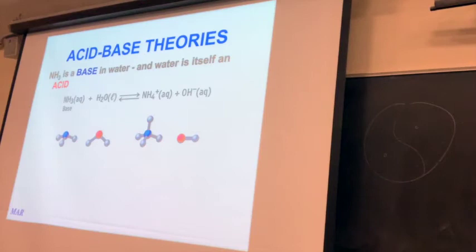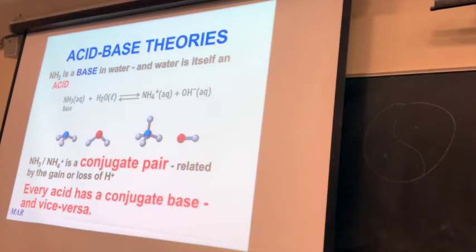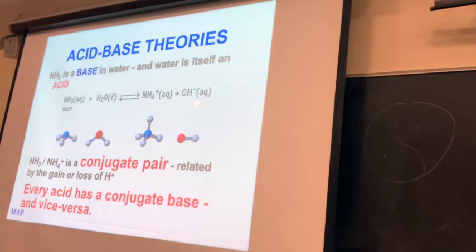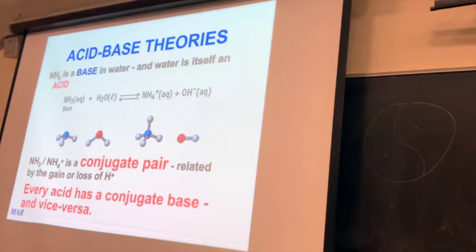Ammonia and ammonium are related by an H+: NH3 takes an H+ to make NH4+, and NH4+ gives up an H+ to make NH3. We call these conjugate pairs. A conjugate pair is always two chemicals related by addition or subtraction of an H+. Water and hydroxide are also conjugates — give up an H+ to make hydroxide, take an H+ to make water. Every acid has a conjugate base, and every base has a conjugate acid.